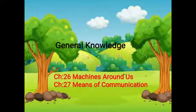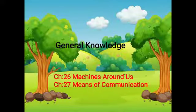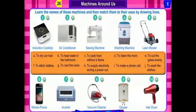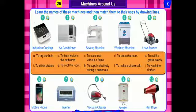Hello my gorgeous kids. Welcome back to our GK class. Today we will learn chapter number 26, Machines Around Us, and chapter number 27, Means of Communication. First we will learn chapter number 26, Machines Around Us. You can see different types of machines here. These all machines are very useful to us every day.